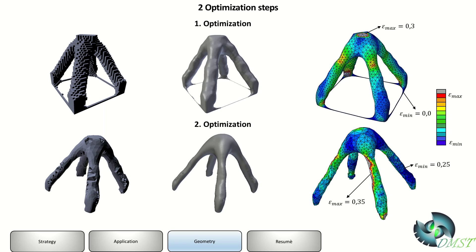We get a better ratio between the max, at least not the density max but the strain max and the strain minimum. First we have 0.0 and 0.3, and now we have 0.35 and 0.25. So a second optimization is useful for optimizing till the end.